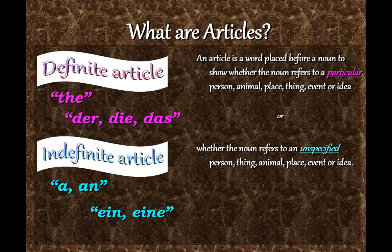In German, the articles go with the gender of the noun. Is something masculine — 'der'; feminine — 'die'; or neuter — 'das'? Masculine is 'männlich,' feminine is 'weiblich,' and neuter is 'sächlich.'